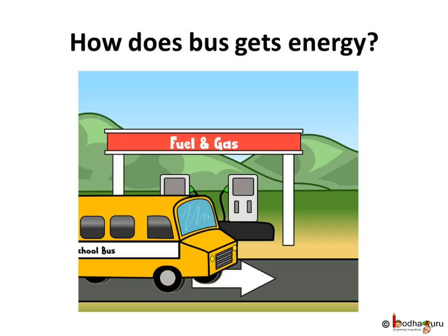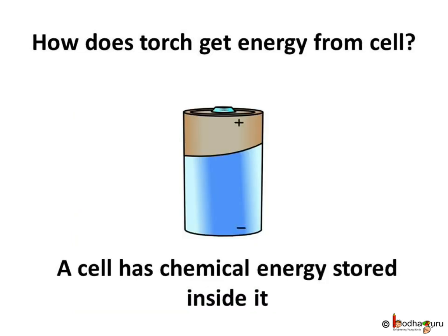The bus fills petrol from the petrol pump, and thus the petrol pump supplies it energy. Then how does a cell supply energy to a bulb? As you know, a bulb needs electric current to glow.